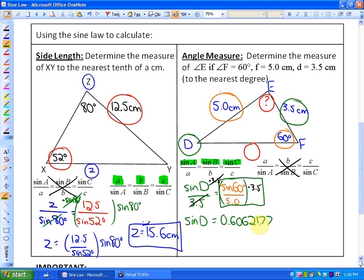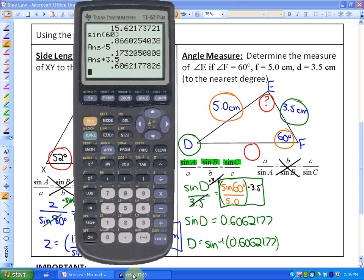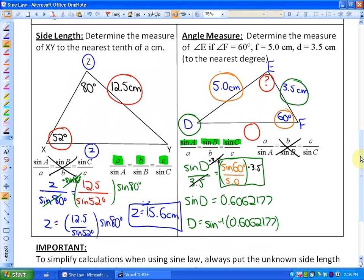Trig ratios are very finicky, so you don't want to round too early or you'll get a wrong angle. To solve for an angle, we need to take the inverse trig function. So I'm going to take the sine inverse of 0.6062177. And what I can do here is just take the sine inverse of my previous answer, because that's already memorized in my calculator, and I'll get the angle. Angle D to the nearest degree is 37 degrees.